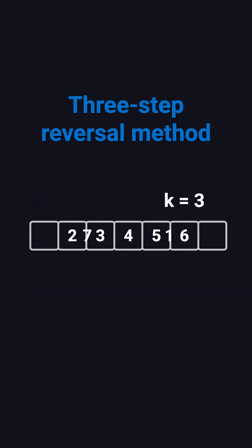Let's see it in action. After reversing the whole array, the last elements move to the front, but backward. Then we reverse the first three elements to fix their order. Finally, reverse the remaining four, and we get 5, 6, 7, 1, 2, 3, 4.